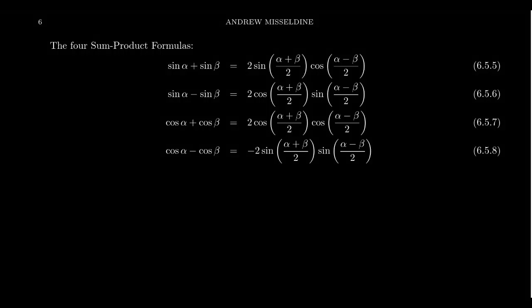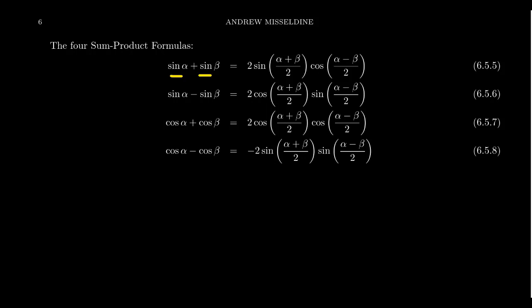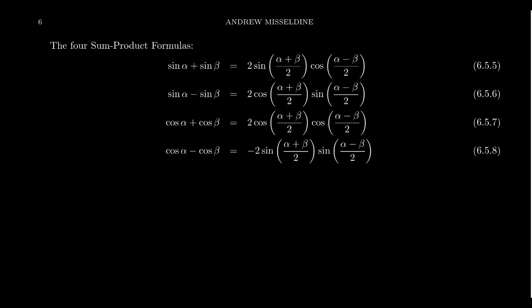In a previous video we learned about the product-to-sum identities. It turns out there are also four sum-to-product identities — these are identities that turn sums into products. Maybe you have a trigonometric sum or difference that you'd rather have as a trigonometric product. We see the four sum-to-product identities on screen: a sum of sine and sine, a difference of sine and sine, a sum of cosine and cosine, and a difference of cosine and cosine. In all cases they're either both sine or both cosine. These sum-to-product identities are essentially the inverses of the product-to-sum identities from the previous video.